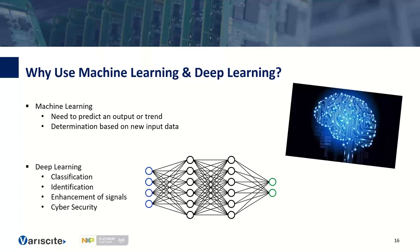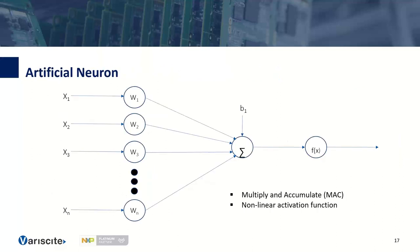The technology is based on neurons. We use machine learning to predict an output trend or determine what will happen based on new inputs. We use deep learning for classification, identification, and enhancement of signals — including signal processing algorithms based on deep learning for signal enhancement. An artificial neuron takes a vector of input values, multiplies them by weights, and accumulates the result — a multiply-accumulate or dot product operation — followed by a nonlinear activation function such as sigmoid, ReLU, or leaky ReLU.